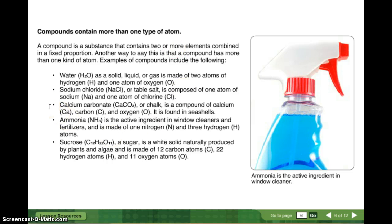Calcium carbonate, CaCO3, or chalk, is a compound of calcium, Ca, carbon, C, and oxygen. It is found in seashells. How many calciums are there? One. How many carbons? One. How many oxygens? Three. Ammonia, or NH3, is an active ingredient in window cleaners and fertilizers, and is made of one nitrogen and three hydrogen atoms. Sucrose, C12H22O11, is a sugar, and it's a white solid naturally produced by plants and algae, and is made of 12 carbons, 22 hydrogens, and 11 oxygen atoms. And yes, that's important that you know the subscript, or the little letter, tells how many of each type of atom there are in a compound.